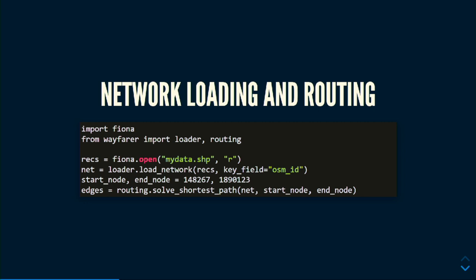As opposed to pgRouting, where you have to have a PostGIS database, with this you can work with any database, or a shapefile, or basically anything that GDAL can load. This gives an indication of the API: you load your network, pass in two nodes, and you get a list of edges back. That's the basic concept.